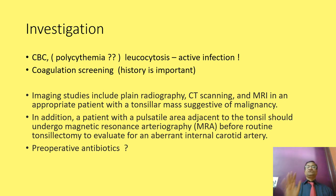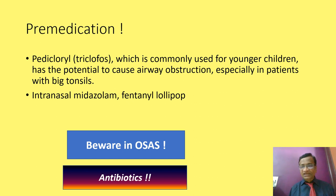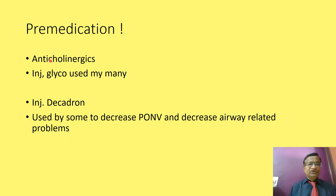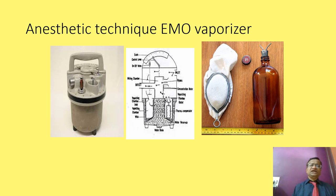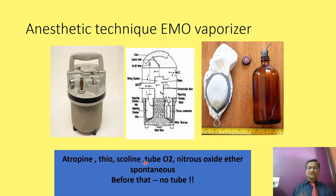Pre-medication: trichlorphos is commonly used in children. If the patient has OSA, be cautious. We commonly give anticholinergics such as glycopyrrolate, dexamethasone to decrease PONV and extubation-related airway problems. Historically, the anesthetic technique involved pouring ether onto a gauze mask, waiting for the patient to go under, and then the surgeon performed the tonsillectomy before the ether wore off.